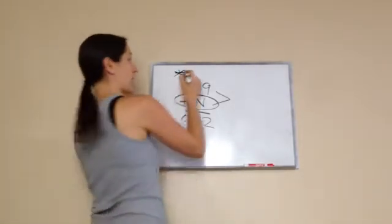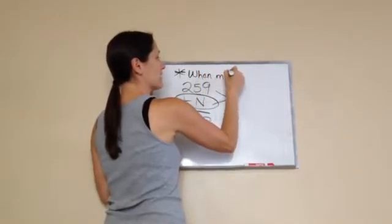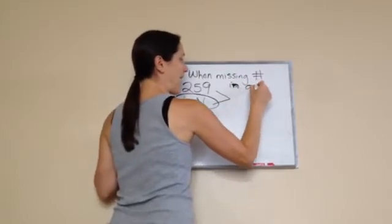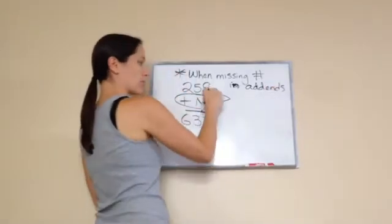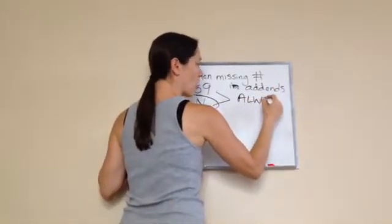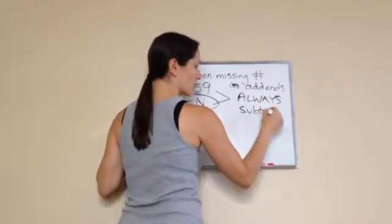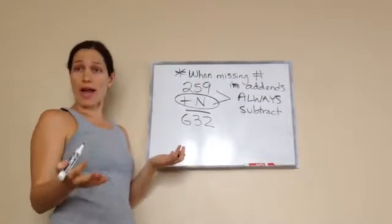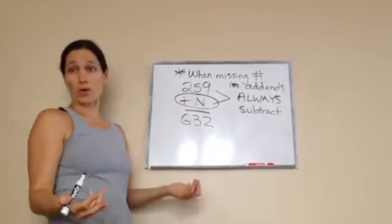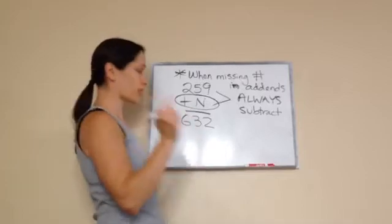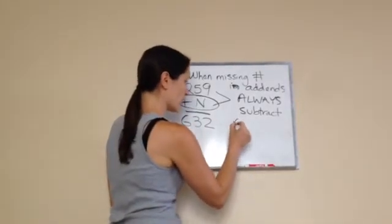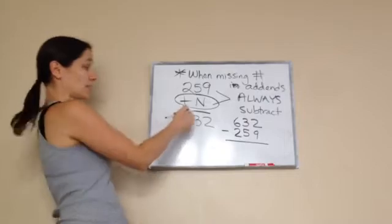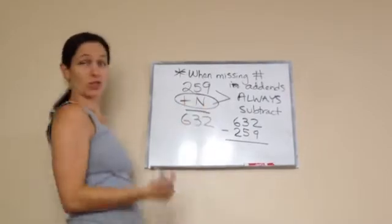So I write this little asterisk down and say when you have a missing number in the addends, which are the numbers that are being added, you always, always, always subtract to get your answer. So what do I subtract? You always put the bigger one on top. You're exactly right, good observation. So let's do that: 632 minus 259.